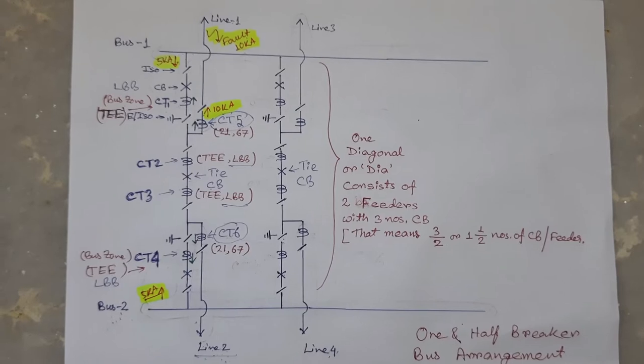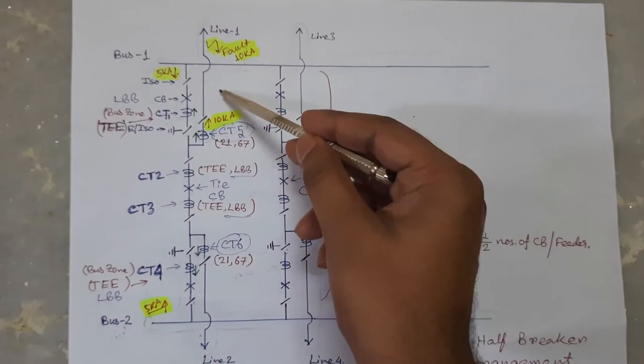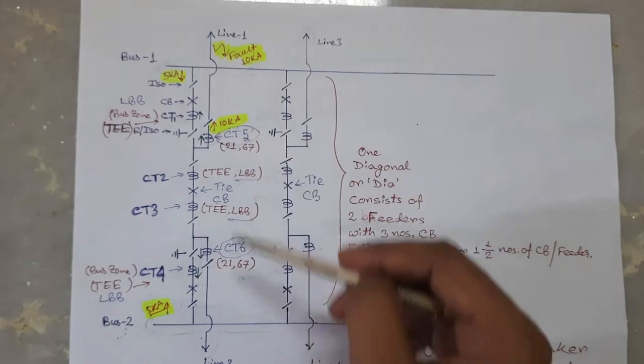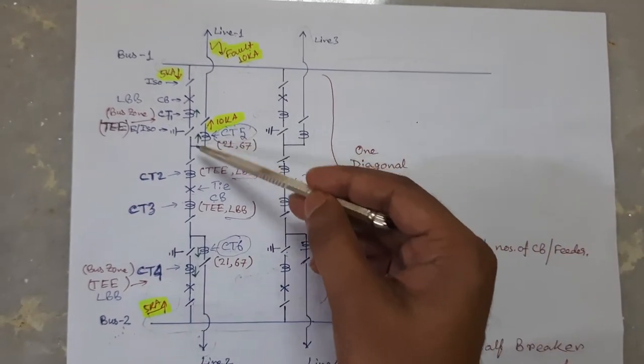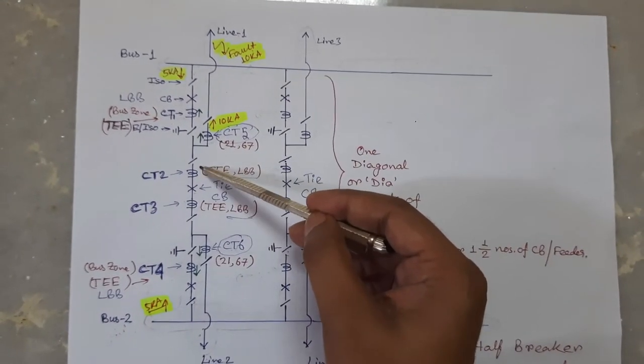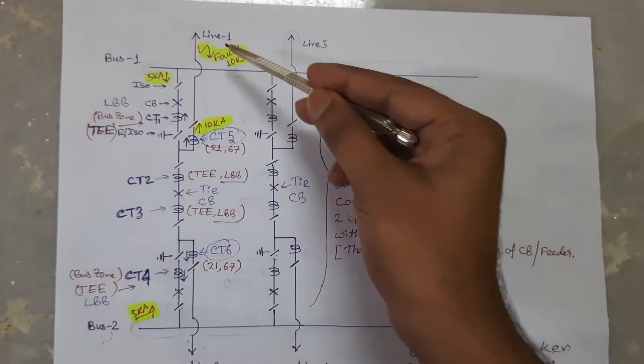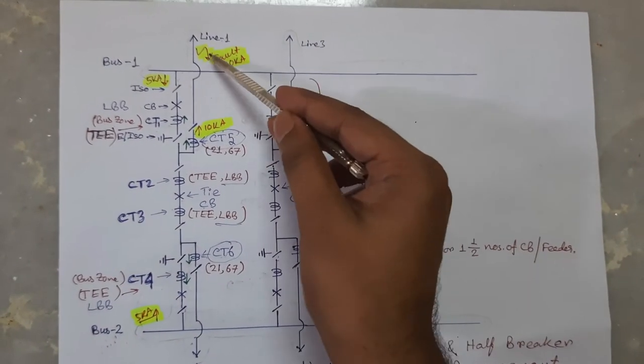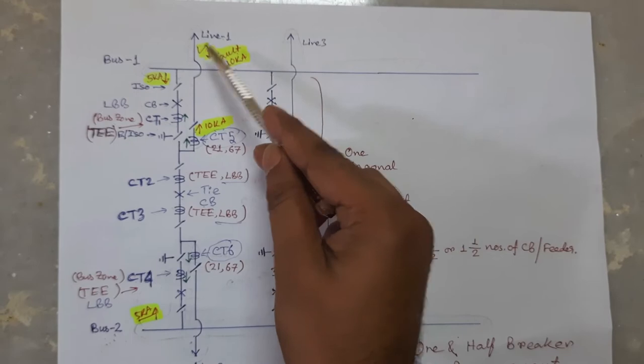In one and half breaker scheme, each feeder is connected with two bus by two number of circuit breakers. So, if any fault occurs in any feeder or line, then to clear that fault,